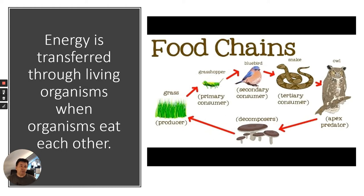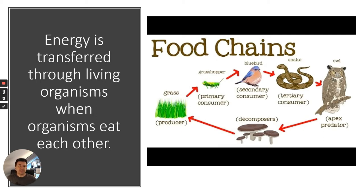Organisms eat each other, so we have herbivores, carnivores, and omnivores. The energy from sunlight transferred into the biomass of the plant is then transferred to other species — primary consumers, secondary consumers, tertiary consumers and so forth. Eventually those organisms die and are decomposed by detritivores and microbes, and then the cycle begins again. The key thing is the sun: energy from the sun is transferred into biomass by the plant and then travels through the food chain.